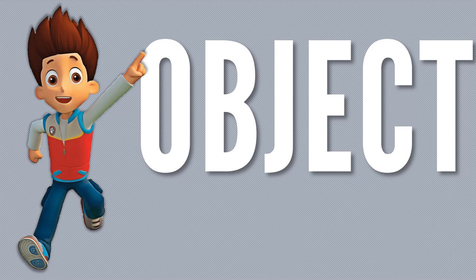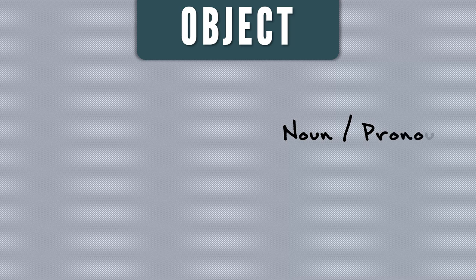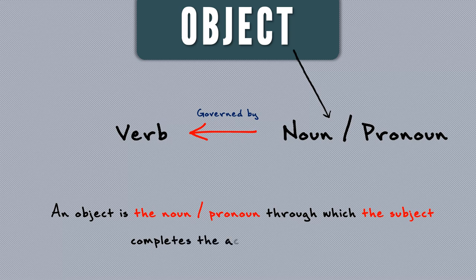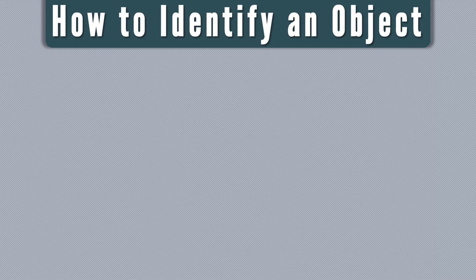Hello, good people. Today we are going to learn about objects, so without further ado let's jump into it. An object is the noun, pronoun, or noun phrase that is governed by a verb or sometimes by a preposition. In another way, an object is the noun, pronoun, or noun phrase through which the subject completes the action of the verb.